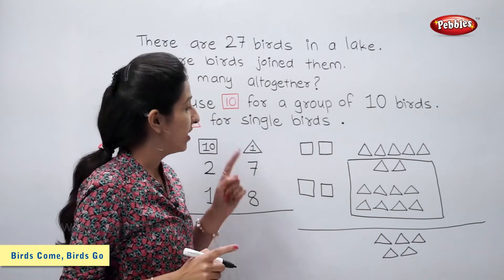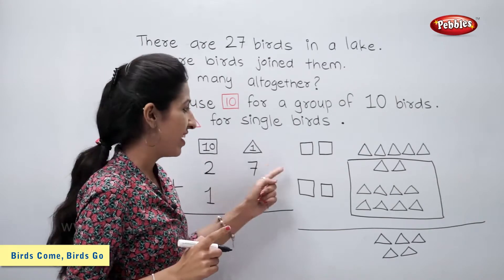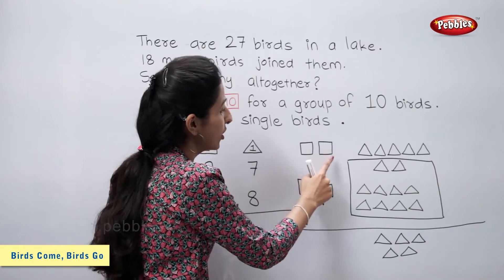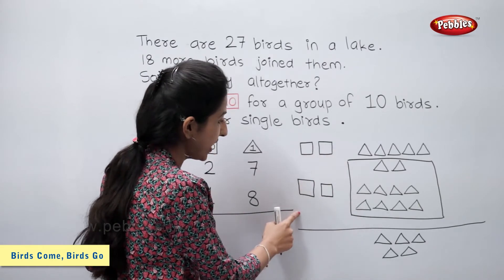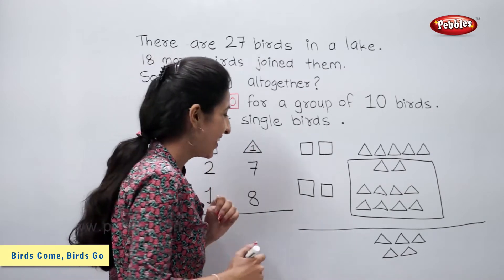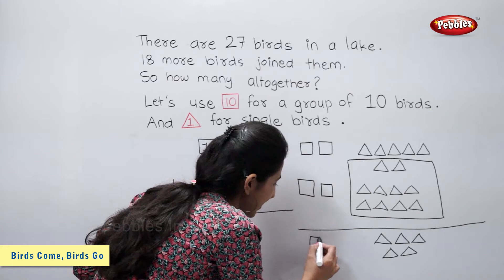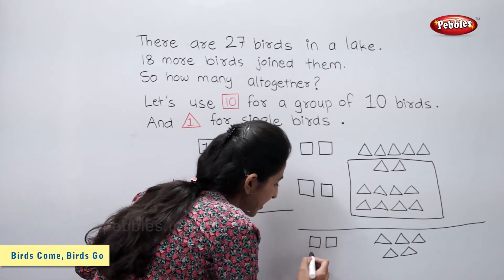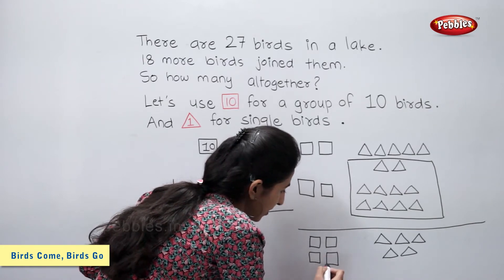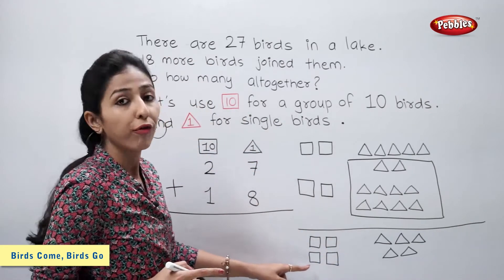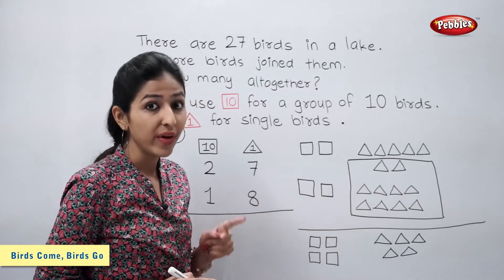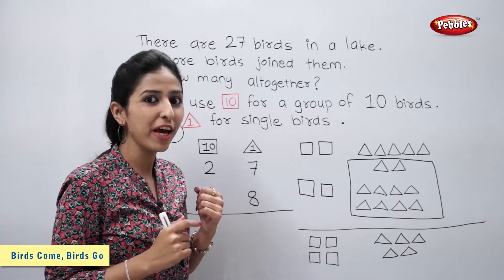Now let's count the number of tens, that means squares: 1, 2, 3, and 4. So we have 4 squares and 5 triangles. Therefore, there are 45 birds altogether.